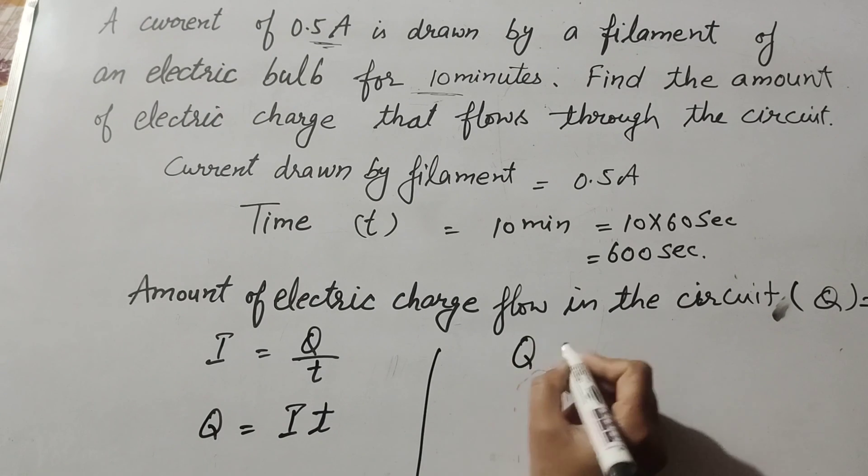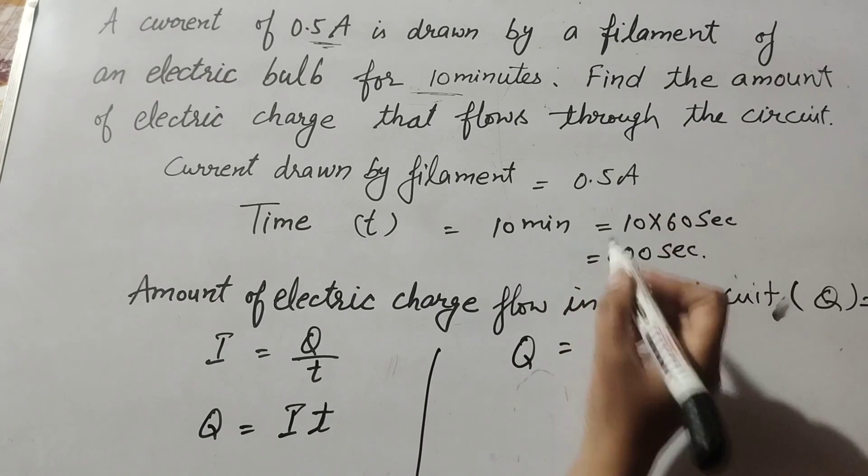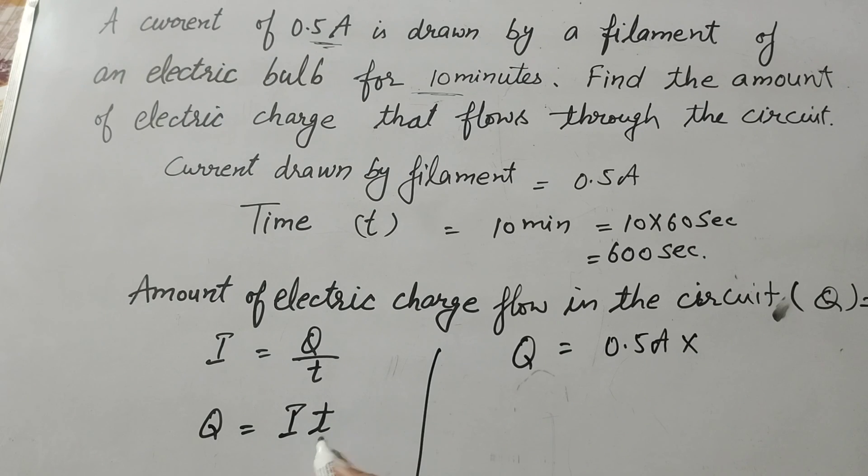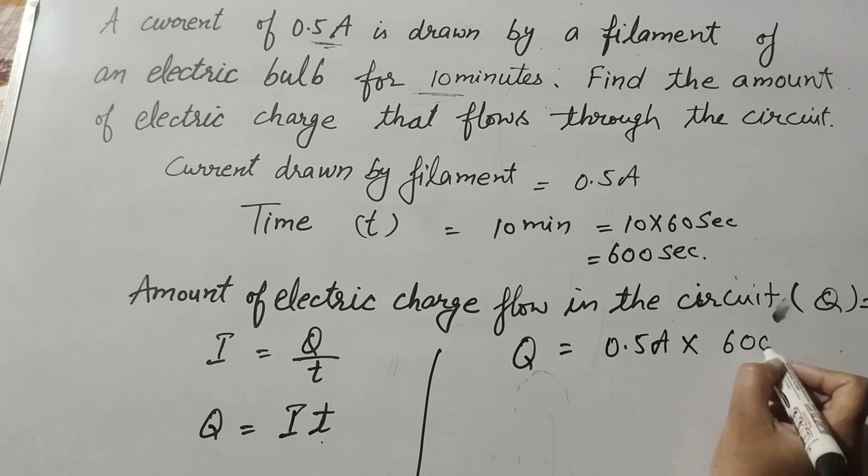So Q is equal to I. I is electric current, it is 0.5 ampere. Multiply by T. T is time, it is equal to 600 seconds.